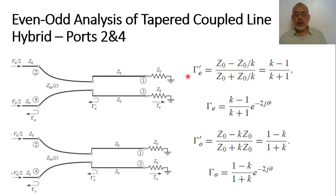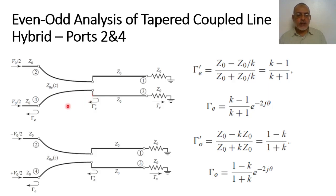The reflection coefficient γ_E' simplifies to (K − 1)/(K + 1). This is the reflection at the intersection point. If we want the reflection at input port 4, the wave travels through phase shift θ in the forward direction and θ again in the backward direction. So the even reflection coefficient at port 4 is γ_E = γ_E' · e^(−j2θ), where e^(−j2θ) accounts for the round-trip phase shift along the tapered line section.